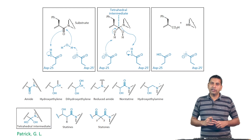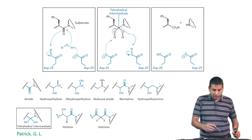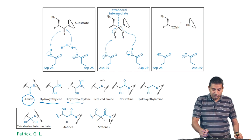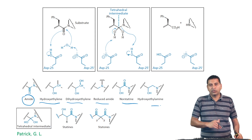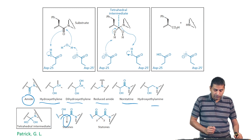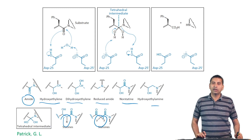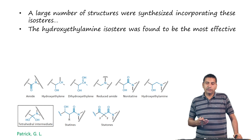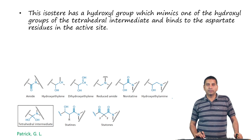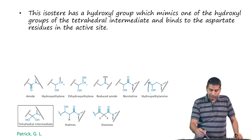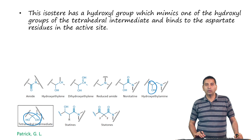Based on chemistry already developed from renin inhibitors, a number of inhibitors were proposed incorporating functional groups such as dihydroxyethylene, hydroxyethylene, reduced amide, hydroxyethylamine, statins, and statones as potential inhibitors. A large number of these structures were synthesized incorporating these isosteres, and it was found that the hydroxyethylamine isostere was the most effective. This isostere has a hydroxyl group which mimics one of the hydroxyl groups in the tetrahedral intermediate, allowing it to bind to the aspartate residues in the active site.